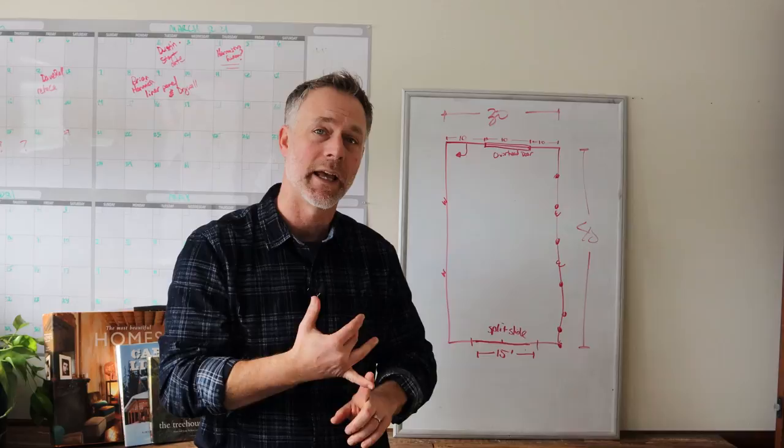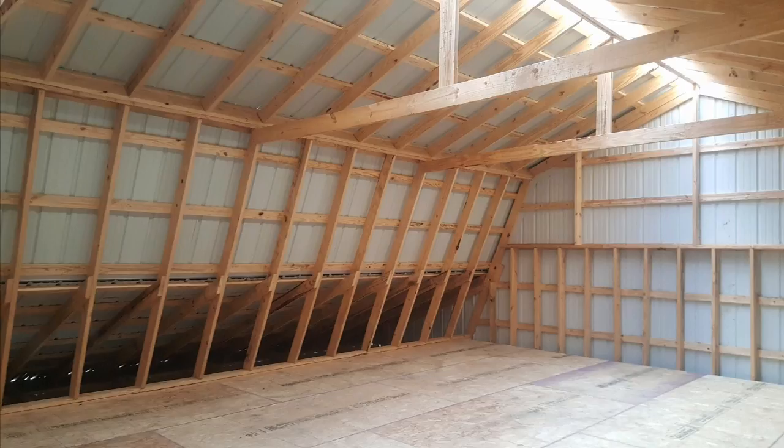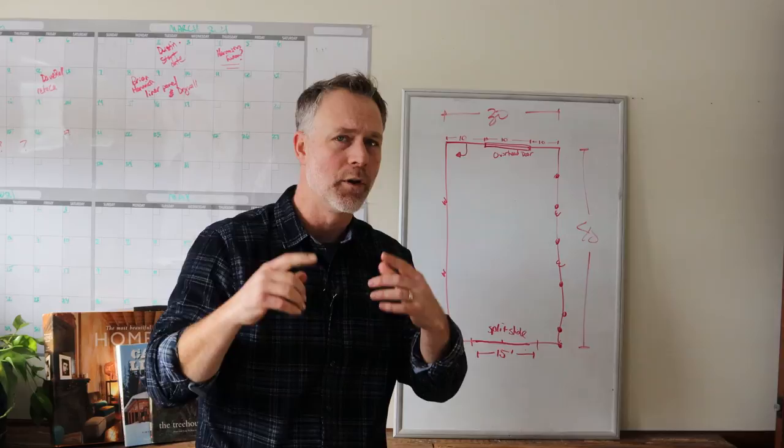You can get your soffit vented, non-vented. If you're looking for free light, because you may not run electric to your barn and have shop lights, you can do your ridge cap right down the center of the building. You can make it clear and gain free light. So those are things that you're going to want to think through as you're having the conversation.